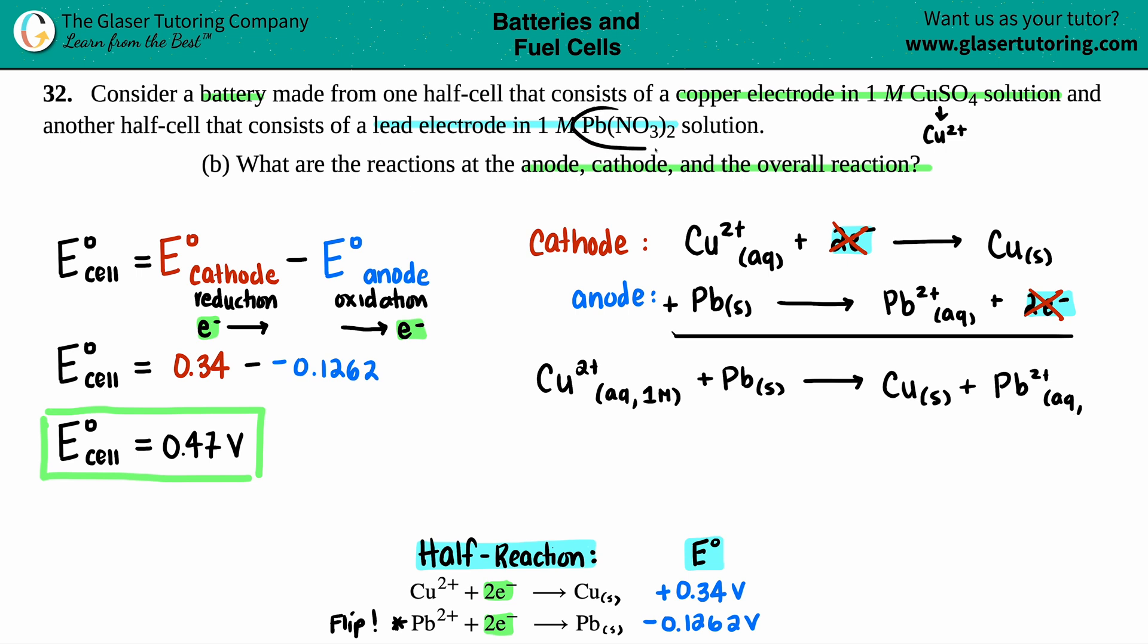And then we could do this one more time for the lead. Pb2+, aqueous. And that was coming from the Pb(NO3)2. The two crisscrossed up, telling me that you have a two plus charge for the lead. And it was one molarity. So I'm just going to say one molarity. And this is your overall reaction.